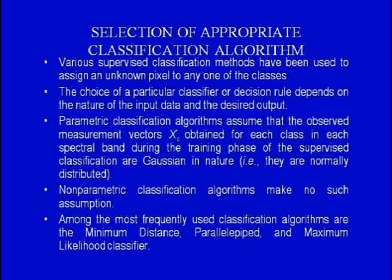We now come to selecting the appropriate classification algorithm. Various supervised classification methods have been used to assign an unknown pixel to one of the classes. The choice of classifier or decision rule depends on the nature of the input data and the desired output. Parametric classification algorithms assume that the measurement vectors for each class in each spectral band are Gaussian — i.e., normally distributed. Nonparametric algorithms make no such assumptions. The most frequently used algorithms are minimum distance, parallel piped, and maximum likelihood classifiers.